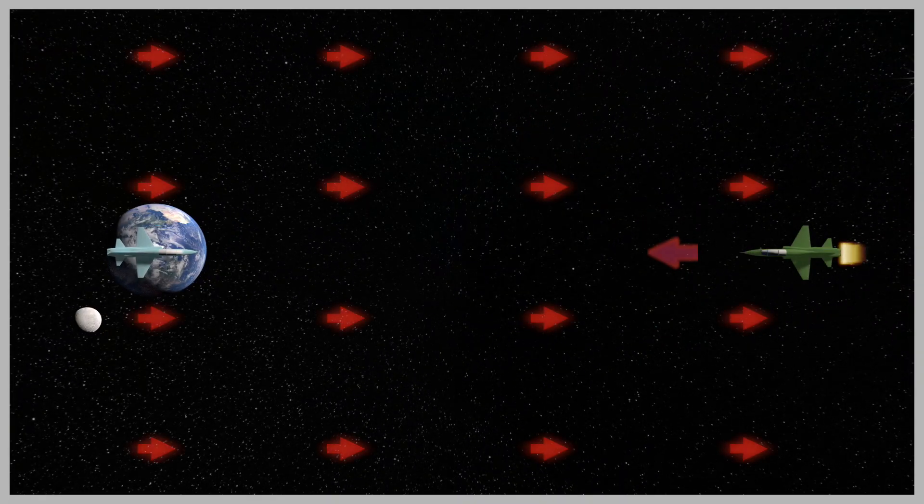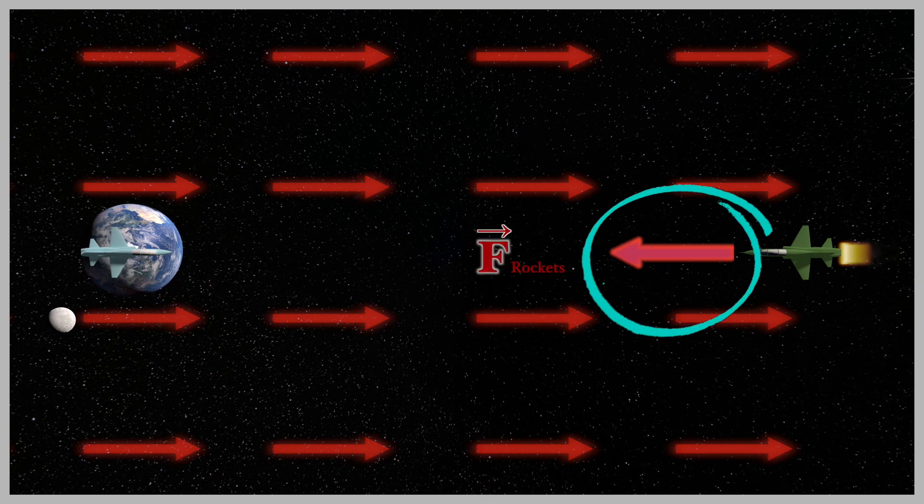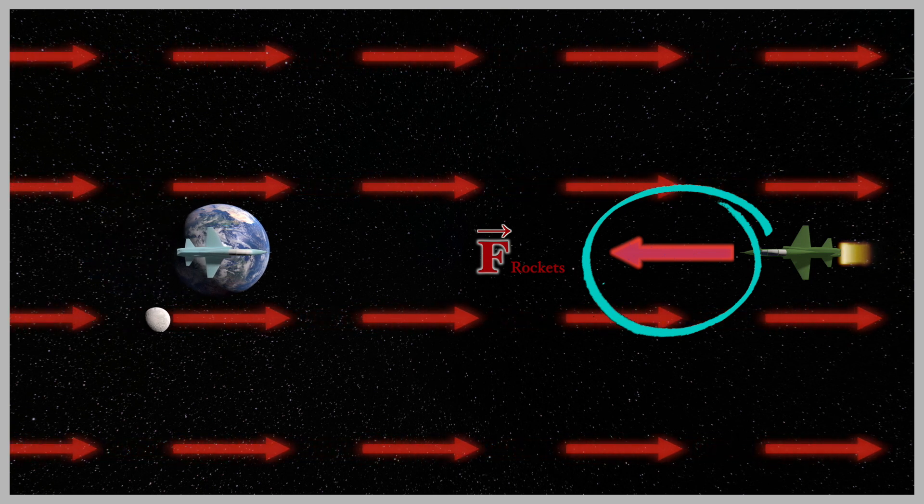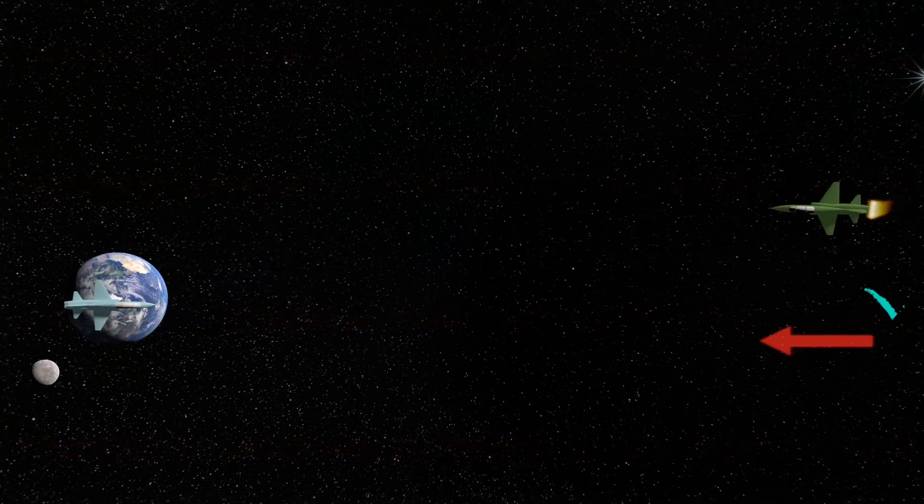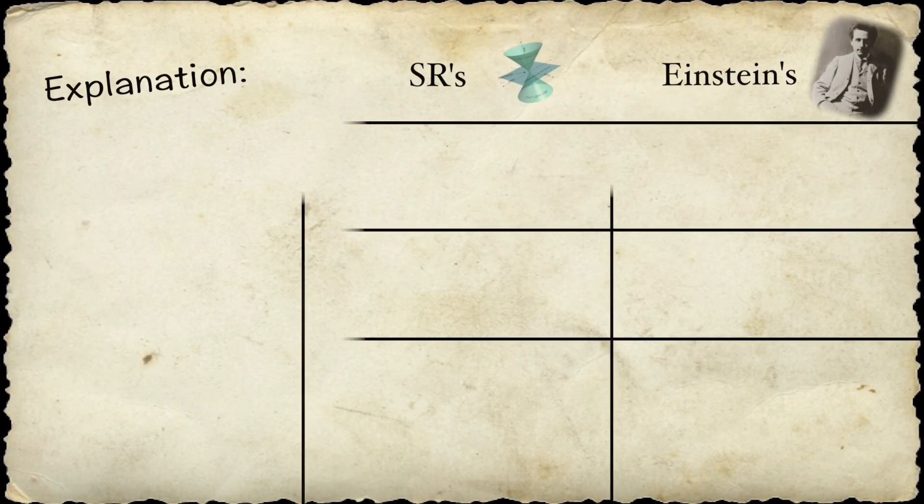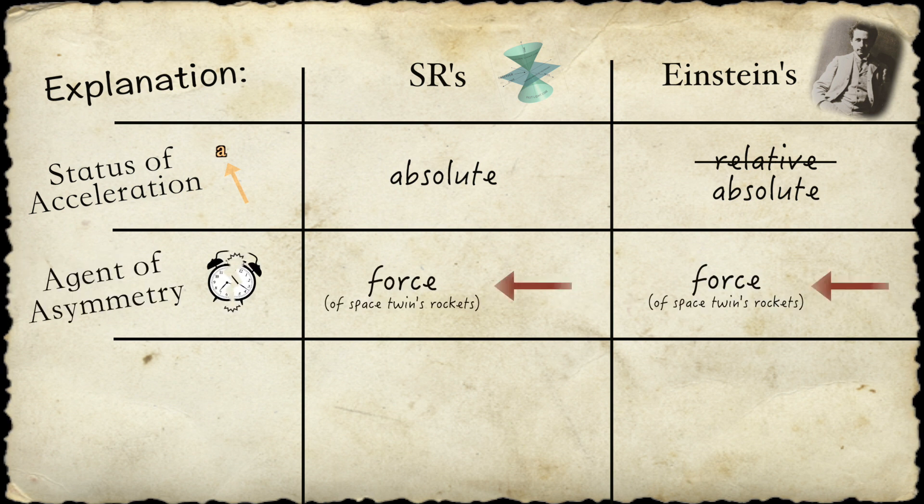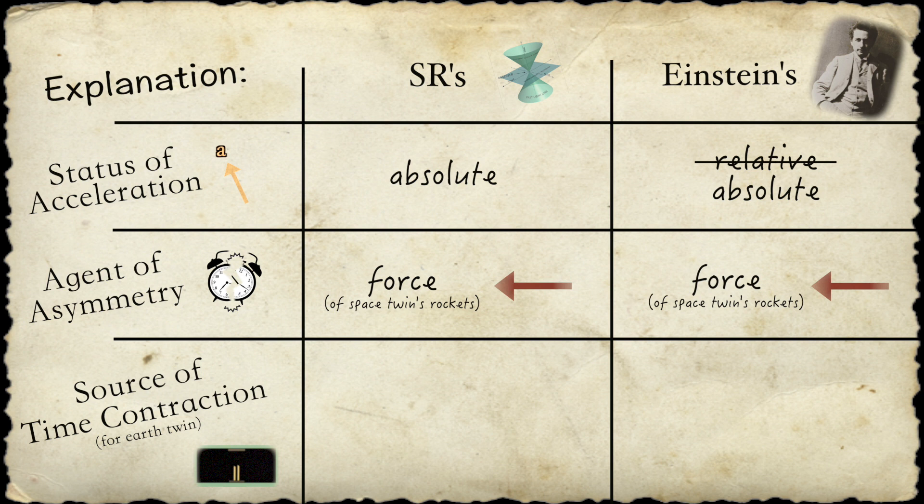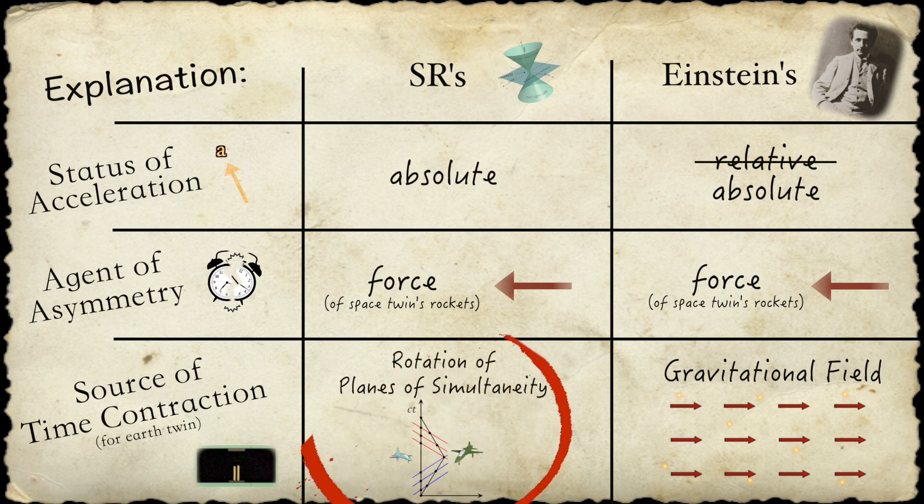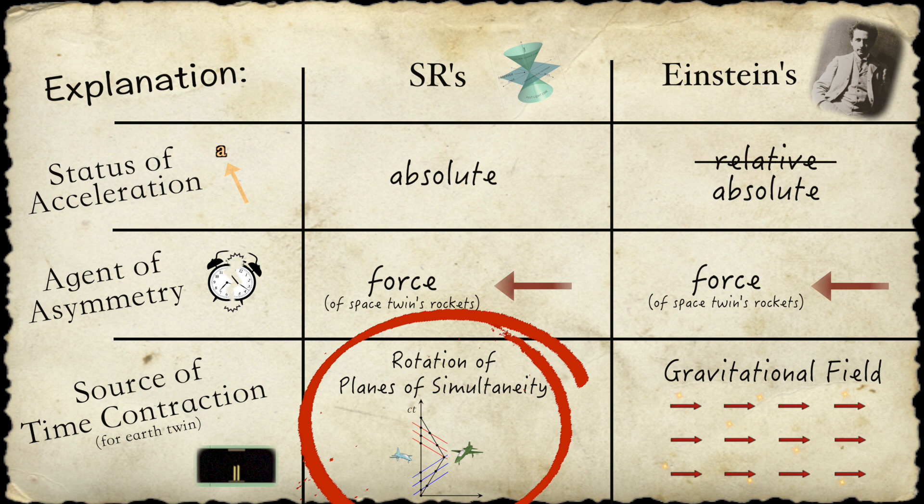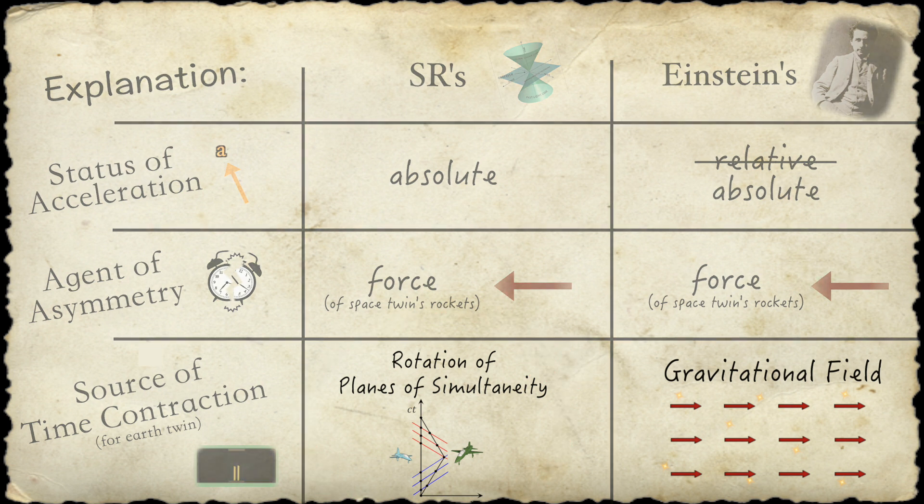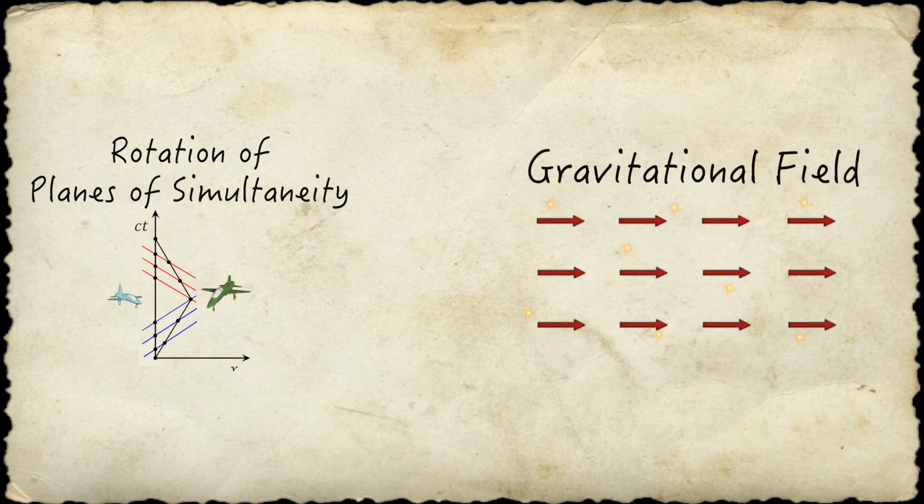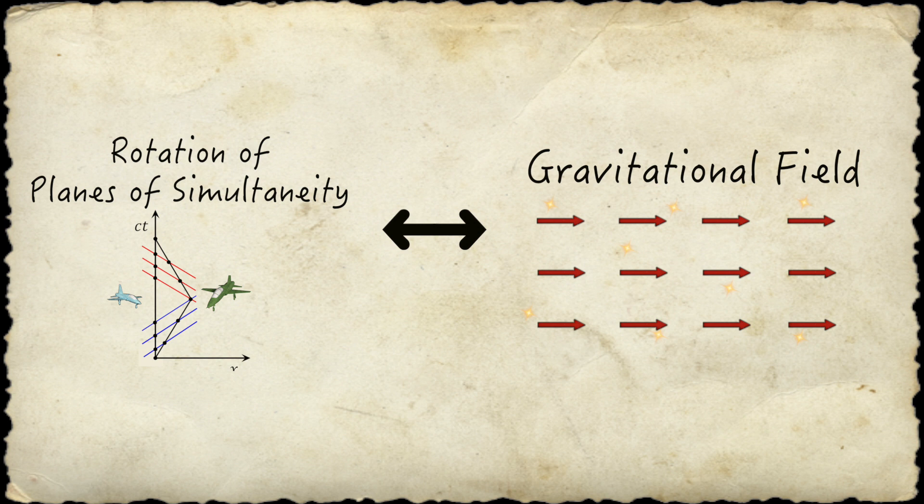Now if you ask what in Einstein's explanation is responsible for causing the difference in the twins' experiences, you'll find that the answer is still the force the space twin feels when he fires his rockets, which is the same answer you'd get from the special relativity solution. In fact, if you stack the two explanations side by side, the primary difference between them is that, in Einstein's explanation, the rapid aging of the earth twin is attributed to the gravitational field, whereas in special relativity, that aging is attributed to the rotation of the space twin's plane's simultaneity. This brings us finally to what is actually being said by this explanation, which is that the equivalence principle essentially implies the equality of these two phenomena. So ironically, it's not gravity that tells us something about the twin paradox, but rather the twin paradox that tells us something about gravity.